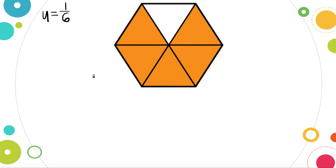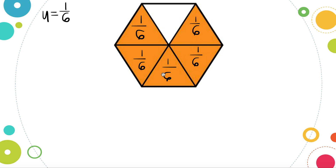We are finding the sum of the unit fractions to identify the shaded portion of this fraction. We are going to label each shaded piece with our unit fraction of one-sixth. Even the non-shaded pieces have a value of one-sixth, but today we want to identify just the fraction that is shaded. Now we are going to take all of our labeled unit fractions and add them together.